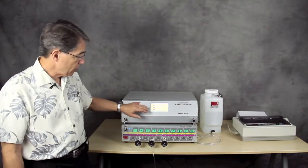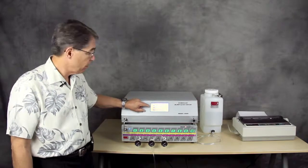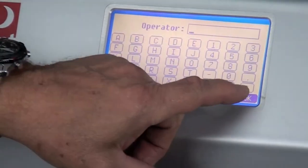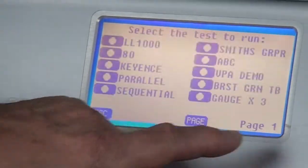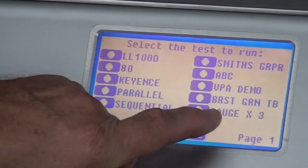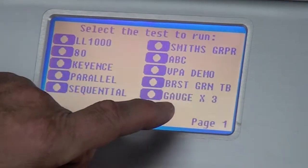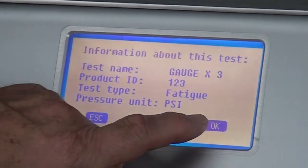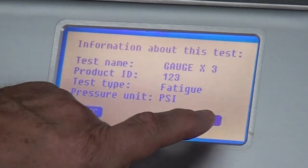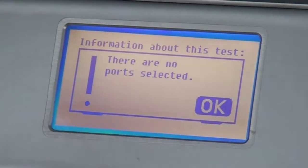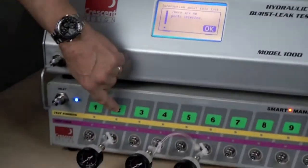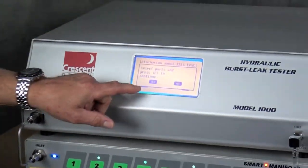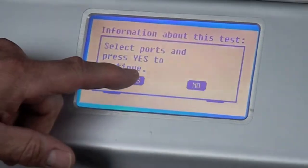So what I've done is I've created a test in the HBLT and we're going to find it here. I'm not going to put an operator or a lot code in right now. And I've created a test called gauge times 3. I'm going to select that. It gives me a brief screen to show me what I've selected. I'm going to say OK. But I didn't select any ports. So let's go ahead and select some ports. In this case 2, 4 and 6. And I have selected them and I'm saying yes.